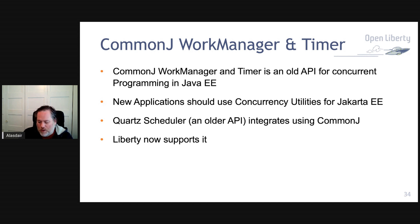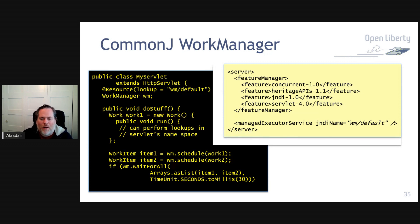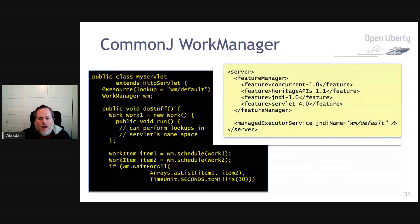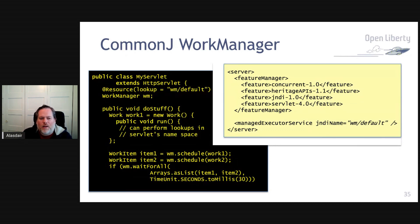To use the CommonJ Work Manager, you configure the concurrent-1.0 feature — the Concurrency Utilities for Java feature — and also configure the heritageAPIs-1.1 feature, which provides APIs we don't encourage for new applications but are provided for migration purposes. Then you configure the ManagedExecutorService in exactly the same way as you would for Concurrency Utilities for Jakarta EE. It can also be assigned as a Work Manager. In the code example, you use @Resource to do a lookup of the WorkManager default, and then you use it exactly as before — create an instance of Work with a run method, schedule it, and wait for completion.